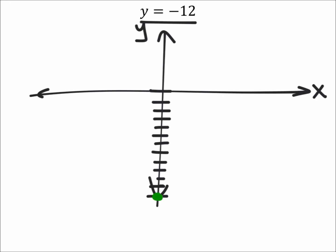Now, that means that everywhere on this line—hopefully your line is better than this one—everywhere on this line is where y is negative 12.